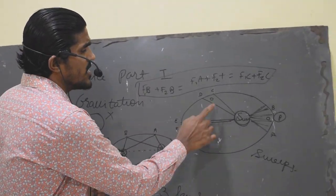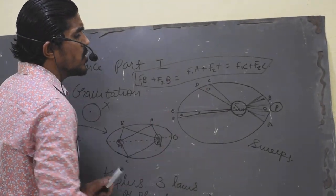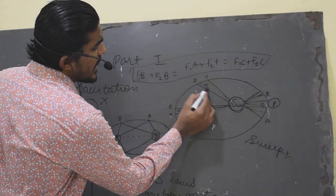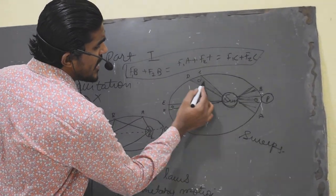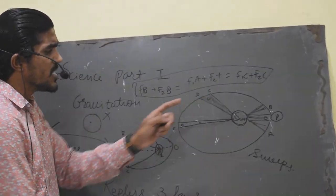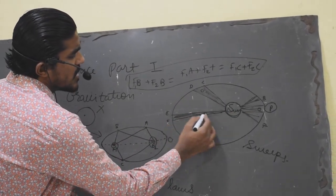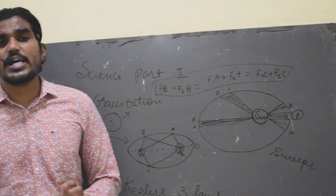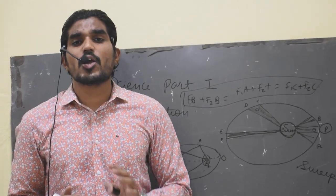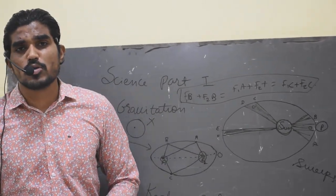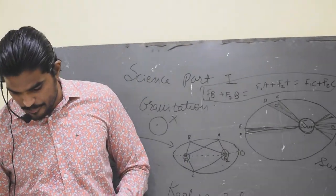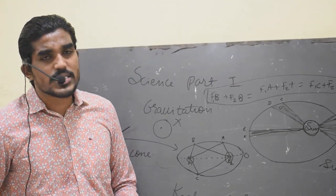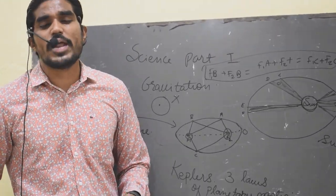You can also notice that if the planet is moving from here to here, when we calculate the areas swept, this area and this area and this area are the same. All three areas are the same, and therefore the time required to cover them is also the same. So this is Kepler's second law of planetary motion.